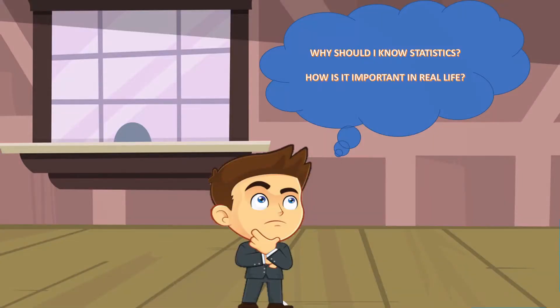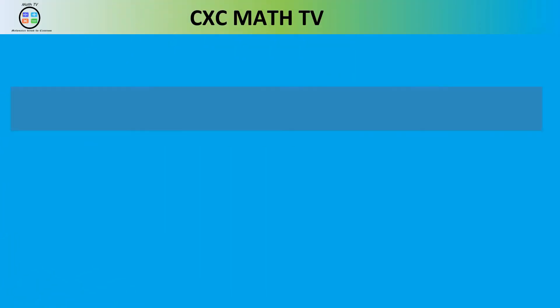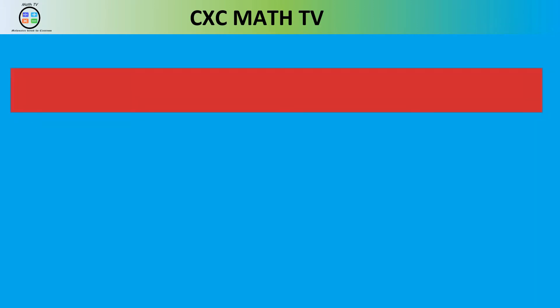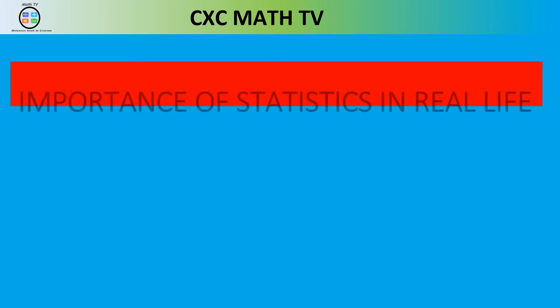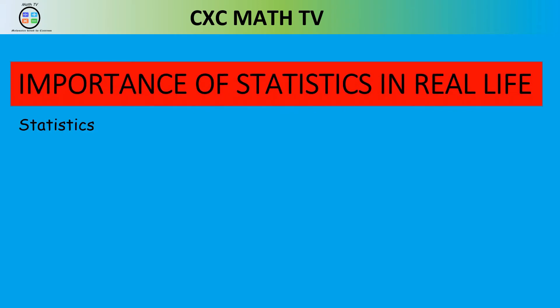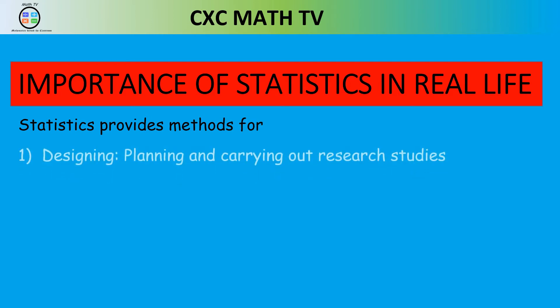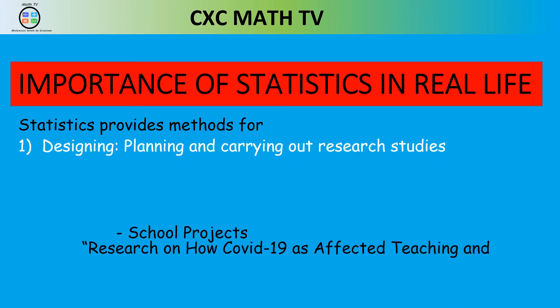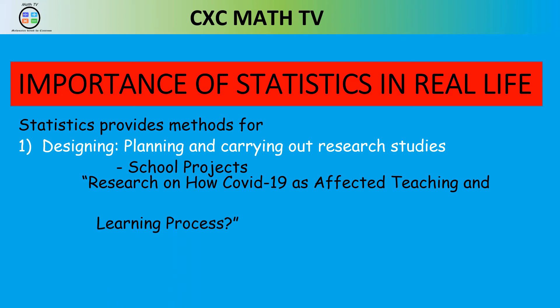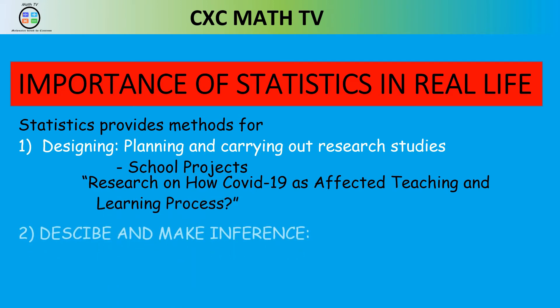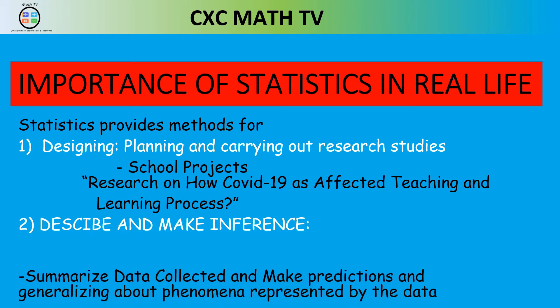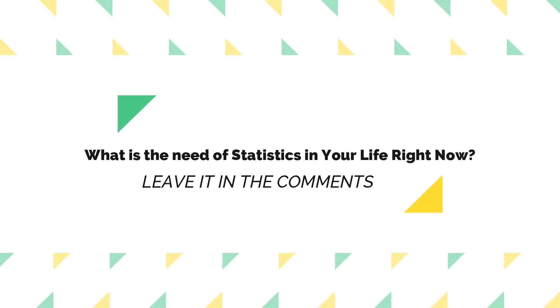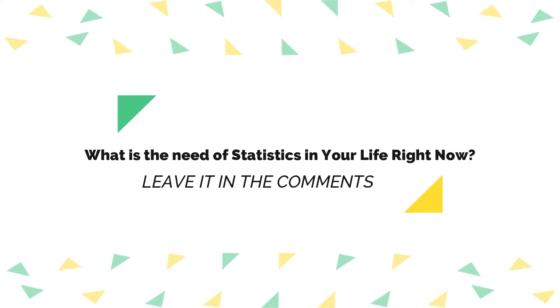Statistics is essential in real life because it provides us with methods that allow us to design and plan how we carry out research studies. For example, you may be given a school project to research how COVID-19 has affected the teaching and learning process. Or maybe you need to describe and make inferences about something — summarizing data that you collected and making a prediction or general conclusion about a phenomenon. Leave a comment telling us some examples of statistics that you see in real life.